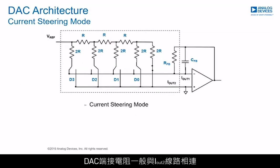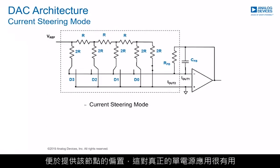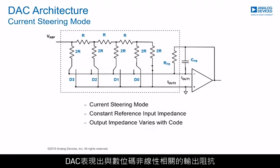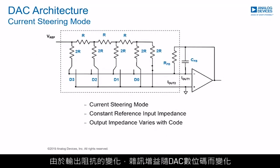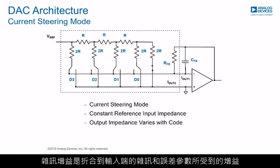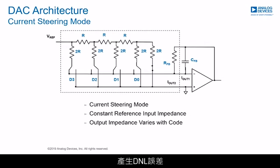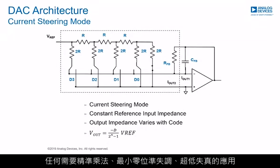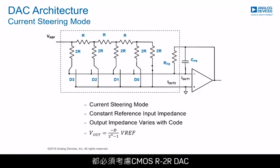The DAC termination resistor is generally tied to the IOT2 line to facilitate biasing of this node for use in true single supply applications. Characteristics of this structure include fixed reference input impedance and a code-dependent output impedance which is not linear with code. Low offset amplifiers are required to maintain linearity, and noise gain varies with DAC code due to variations in output impedance — this results in DNL errors. This architecture is the basis for the multiplying DAC, which multiplies the digital input value by the analog input voltage at the VREF pin. Applications requiring precision multiplication with minimal zero offset and very low distortion should consider the CMOS R-2R DAC.